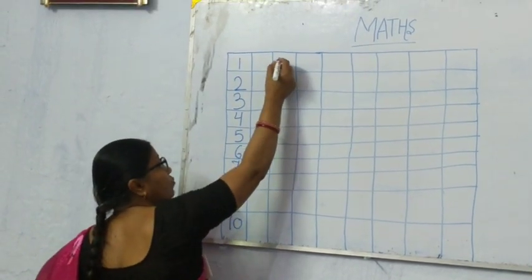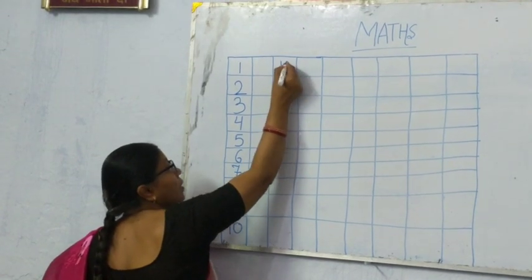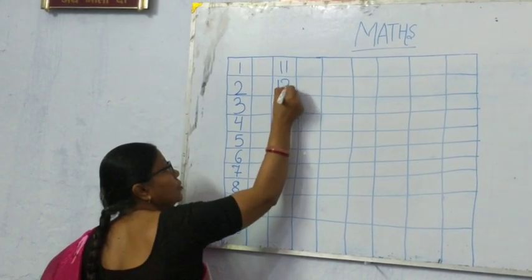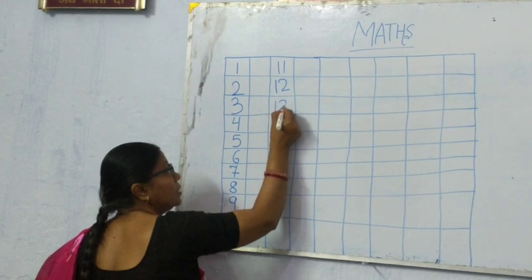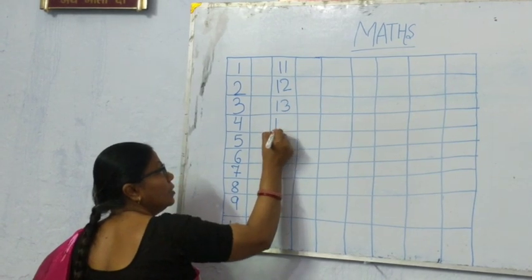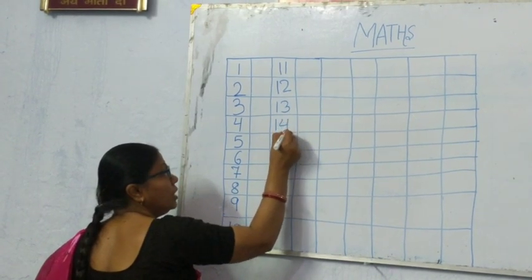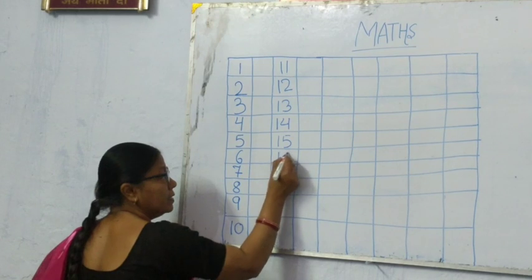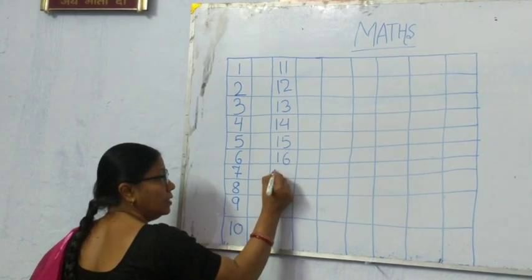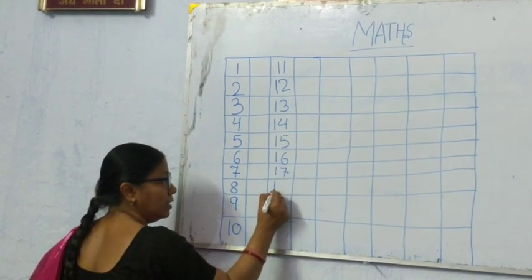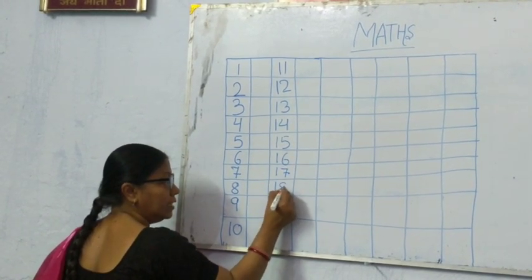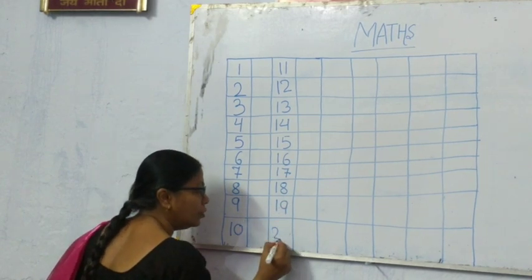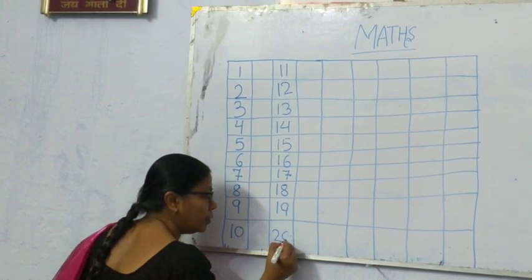Start from here. 11, 12, 13, 14, 15, 16, 17, 18, 19, 20.